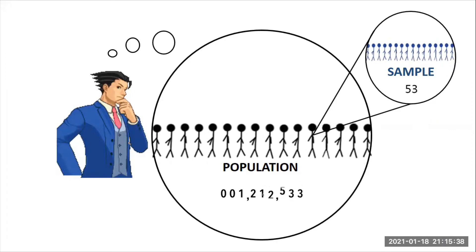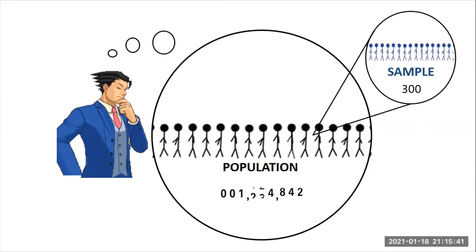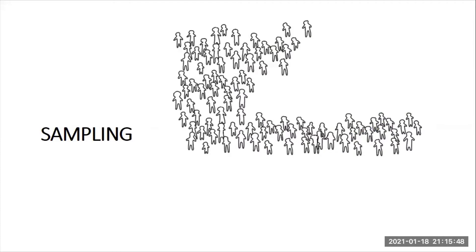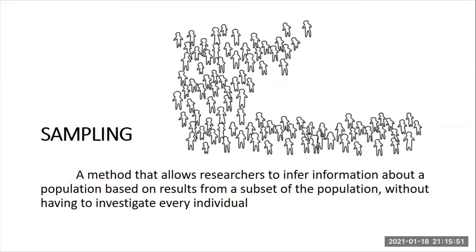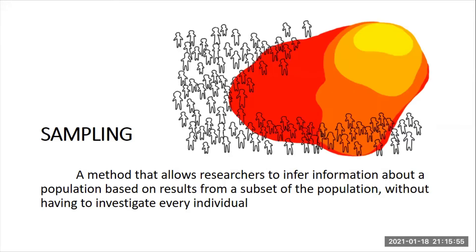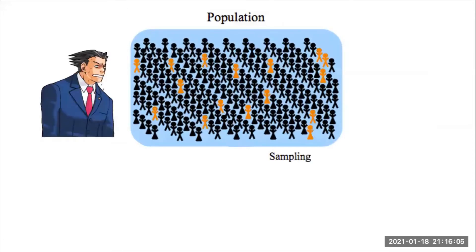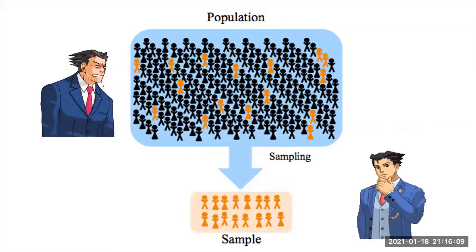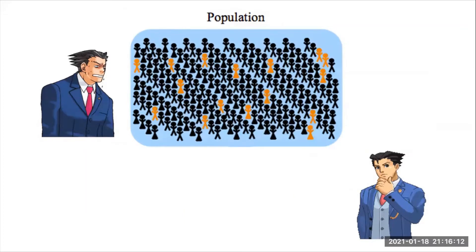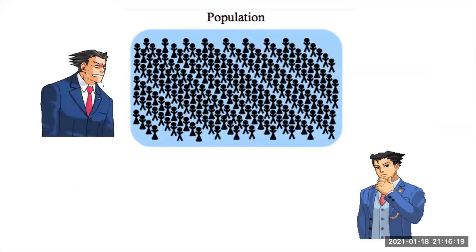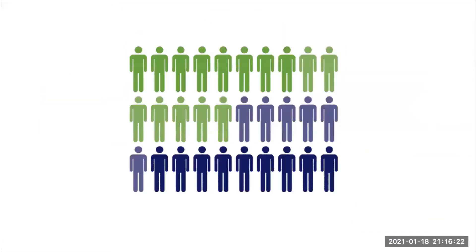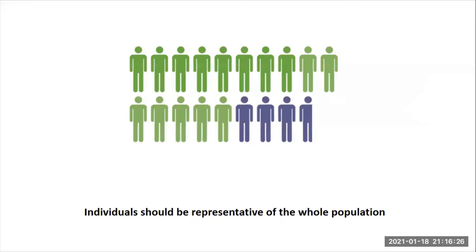So whatever it is that you get out of it, it's somehow what says it all in your research. In research, sampling is really important. It is a method that allows researchers to infer information about a population based on results from a subset of the population, without having to investigate every individual. Reducing the number of individuals in a study reduces the cost and workload and makes it easier to obtain high quality information. But this has to be balanced against having a large enough sample size with enough power to detect a true association or relationship.